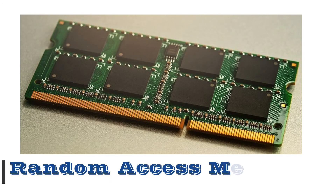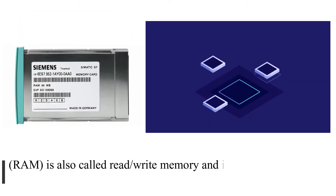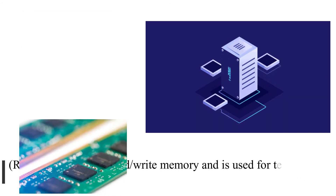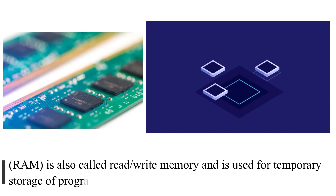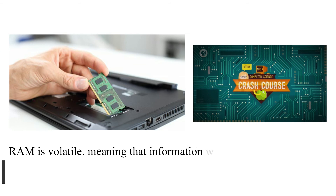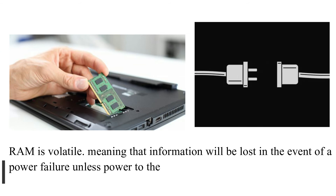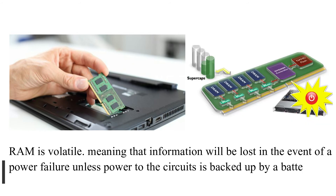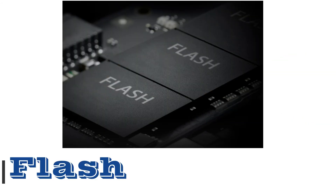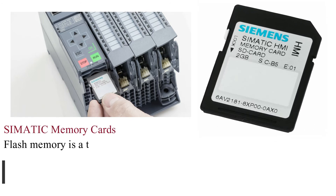Random Access Memory (RAM) is also called read/write memory and is used for temporary storage of programs and data. RAM is volatile, meaning that information will be lost in the event of a power failure unless power to the circuits is backed up by a battery or charged capacitor.